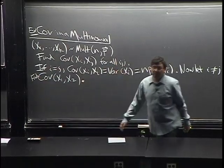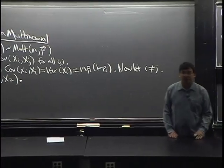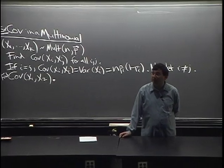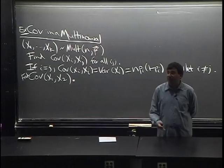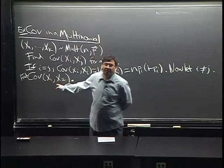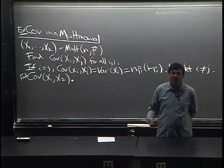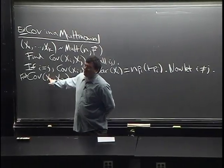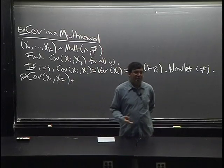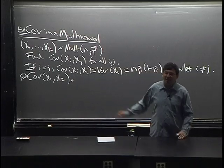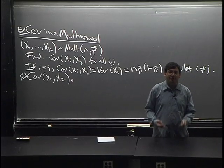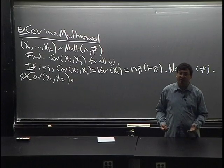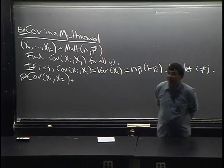Let's find Cov(X₁, X₂). Intuitively, is this positive, negative, or zero? It should be negative — if there are more people in category 1, there are fewer left to be in category 2. The categories are competing for a fixed number of members, so they're negatively correlated. We'll derive this using the variance of a sum and the lumping property of the multinomial.